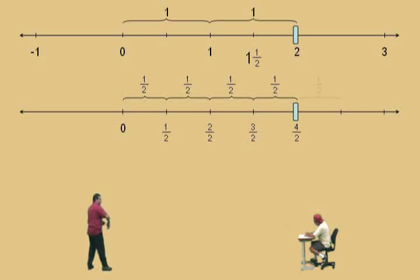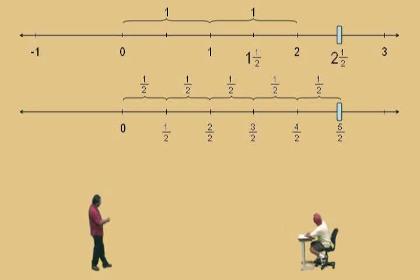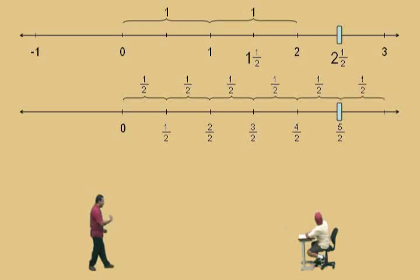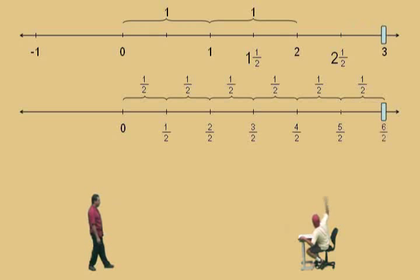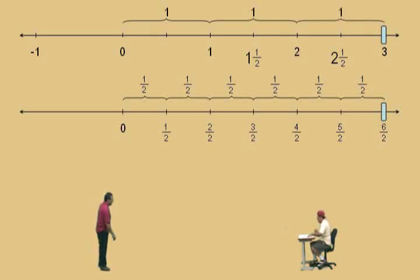Let's continue on. Add another half — how many halves do we have now? Five halves. As a mixed number, it's two and a half. Now let's add one more half. How many halves do we have? Six halves, and six halves is the same as three.